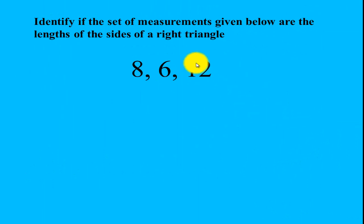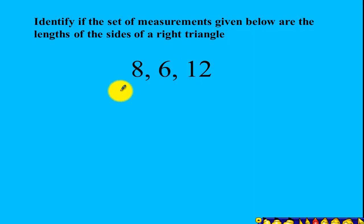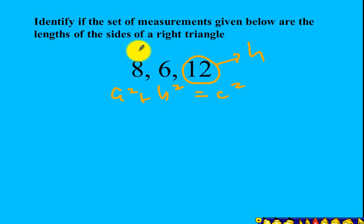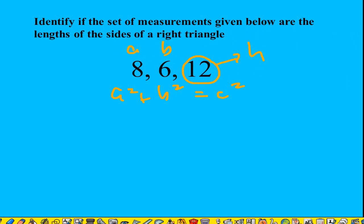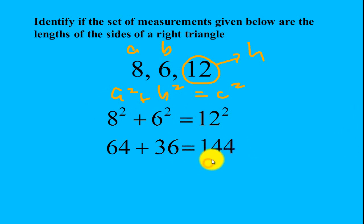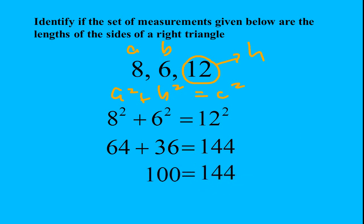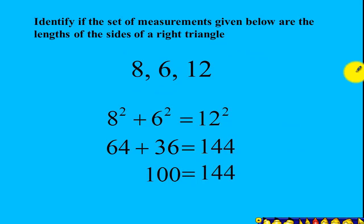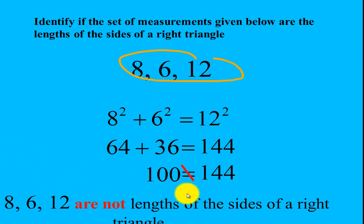Alright, let's try to identify if a given set of measurements are lengths of sides of a right triangle. To verify this, we use the formula a squared plus b squared equals c squared. The biggest number will always be the measurement of your hypotenuse, and the other two will be your legs a and b. So for 8, 6, and 12: squaring the legs gives 64 plus 36. Is it equal to 144, the square of 12? 64 plus 36 equals 100, which is not equal to 144. So 8, 6, and 12 are not lengths of the sides of a right triangle.